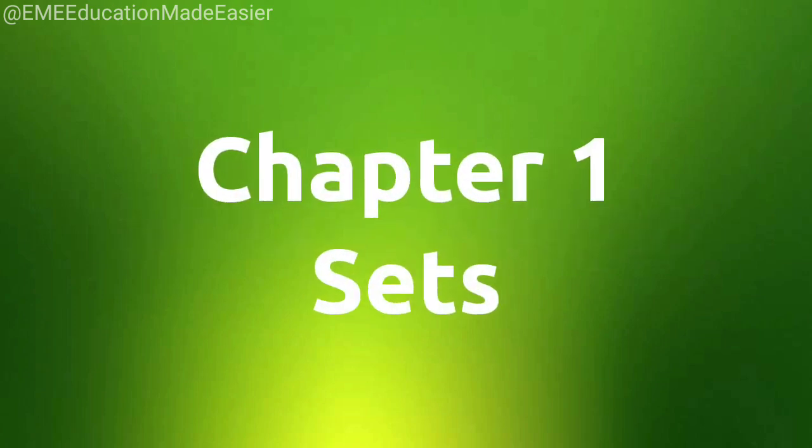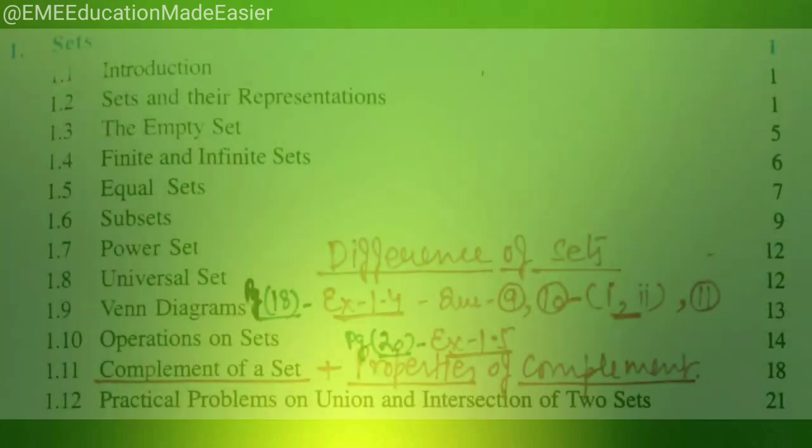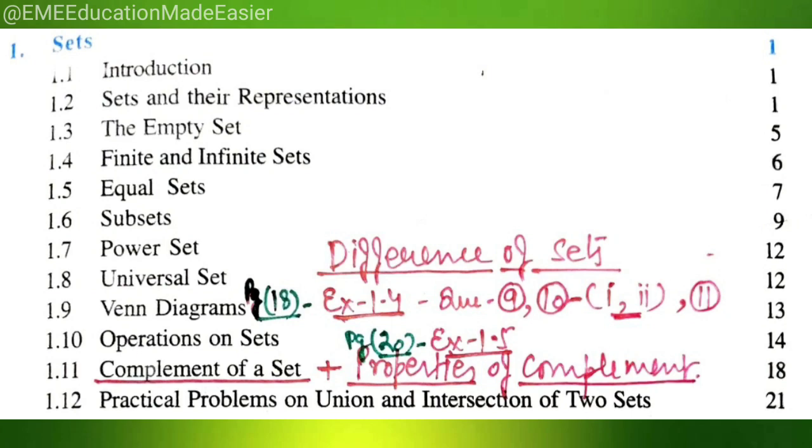From chapter number 1, sets, difference of sets from page number 18, exercise 1.4, question number 9 and question number 10, first and second part and question number 11 have been deleted. And as regards to complement of sets and properties of complement from page number 20, exercise 1.5 has been deleted.